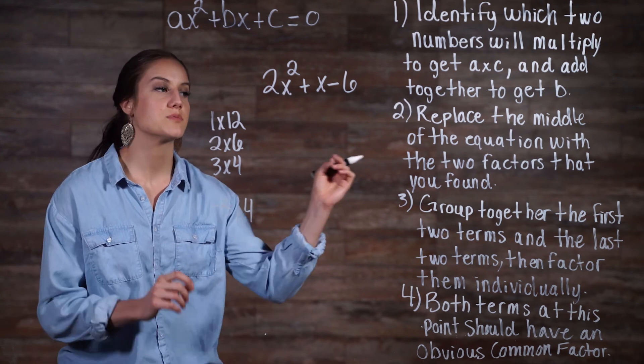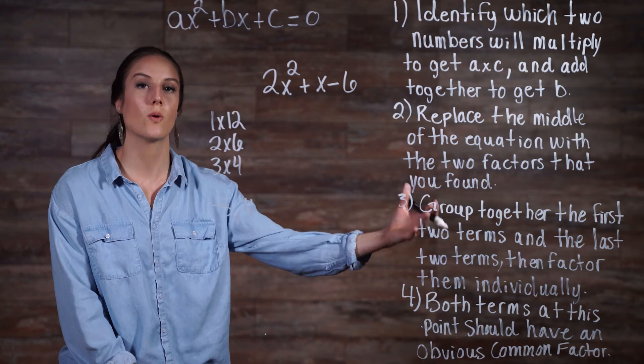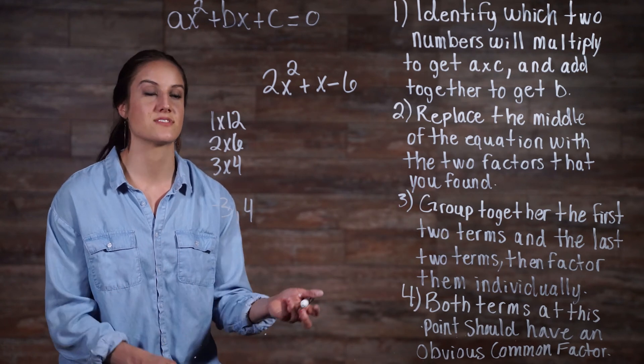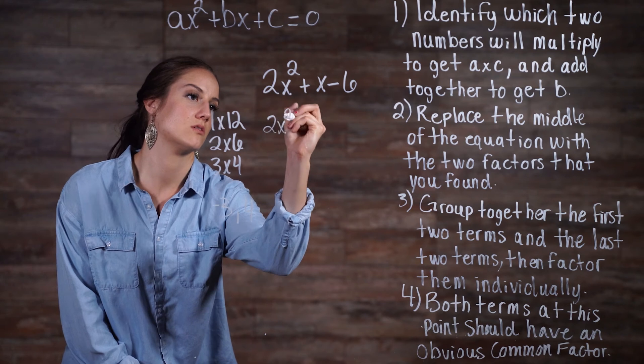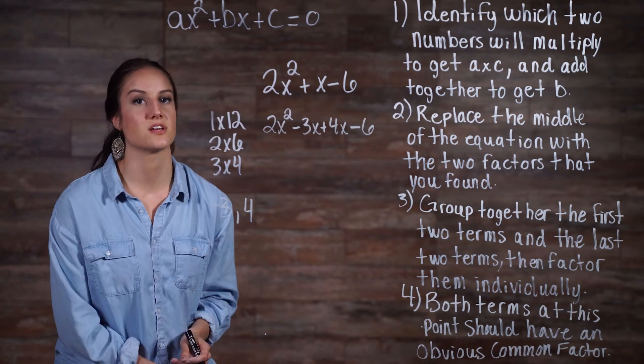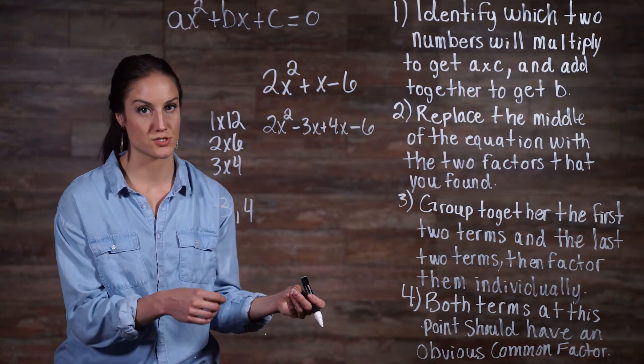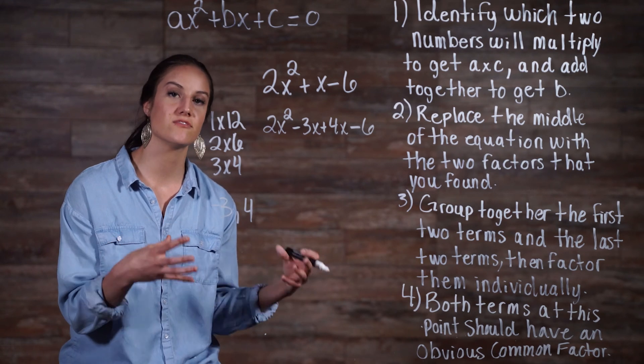So on to step 2. Step 2 tells us to replace the middle of the equation with the two factors that we found. Doing this gives us 2x squared minus 3x plus 4x minus 6. Step 3 tells us to group together the first two terms and the last two terms, then factor them individually.